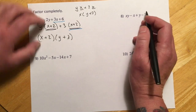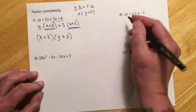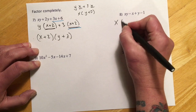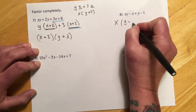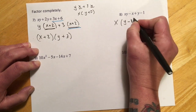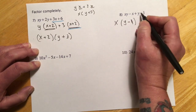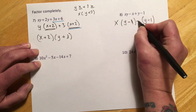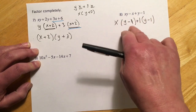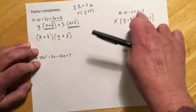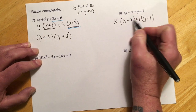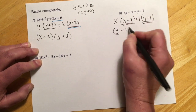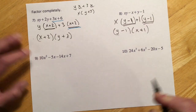For number eight, looking at the first two terms they both have an x in common, so I take x out front leaving y minus one. Then looking at the last two terms — they are exactly the same binomial y minus one, so the trick is to write plus one as the factor pulled from those terms. Now y minus one is my GCF, so it comes out front leaving x plus one behind.